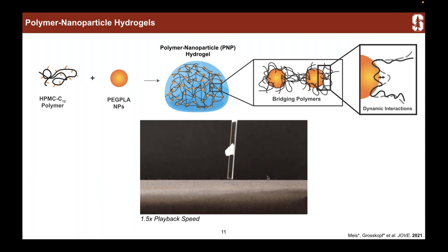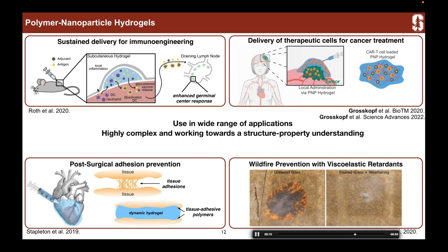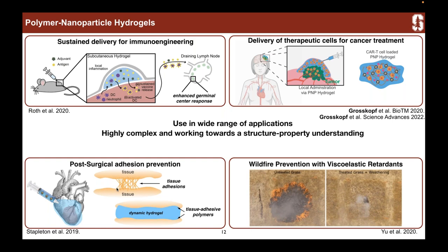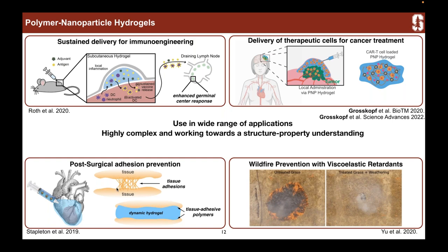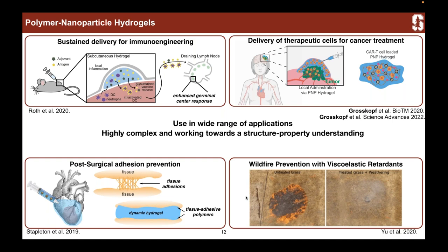These materials have formed the basis for many different projects in our lab, ranging from delivery of drugs and proteins for immunoengineering applications like vaccines, to the delivery of therapeutic cells. We've also used these gels as adhesion barriers in surgery — coating organs with our PNP hydrogel as a protective barrier to prevent organs from sticking together after abdominal surgery. And we even use these gels to deliver fire retardants — not a bio application, but an environmental application to prevent wildfire, where the gels can stick to foliage and help retain fire retardants.